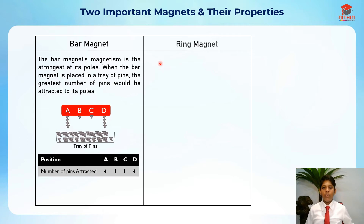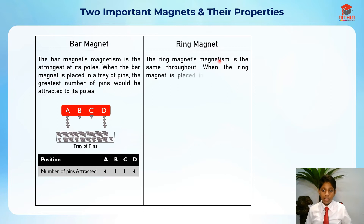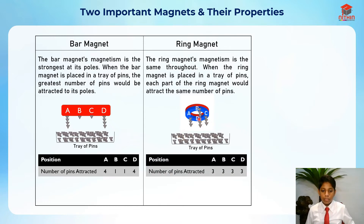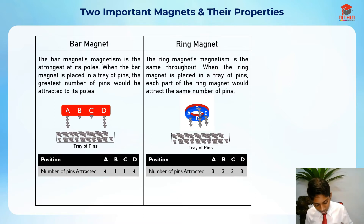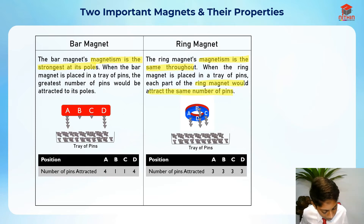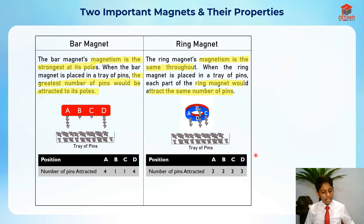The next important magnet is the ring magnet. The ring magnet's magnetism is the same throughout. When the ring magnet is placed in a tray of pins, each part of the ring magnet will attract the same number of pins — for example, three pins for each of its positions, evenly spread throughout. Key words: magnetism is strongest at its poles for the bar magnet, and magnetism is the same throughout for the ring magnet.